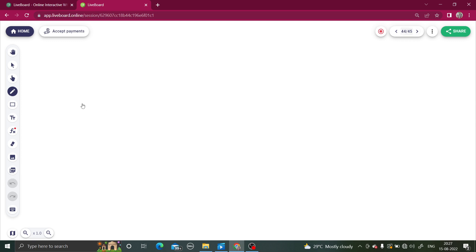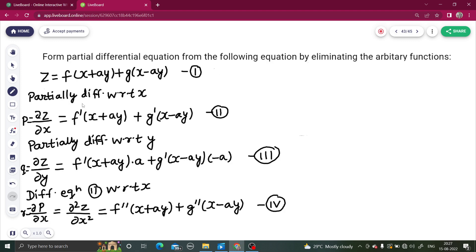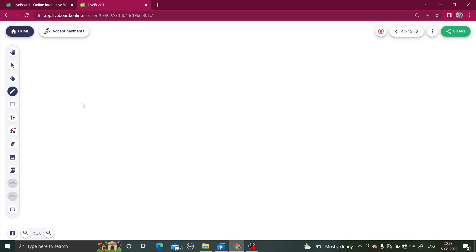Moving to the next page. I have equation number 3 which I have to again differentiate with respect to y. Partially differentiate equation number 3 with respect to y. So it was q, it will become del q by del y, or you can say del 2 z by del y square.